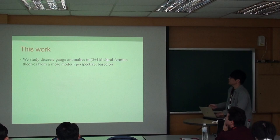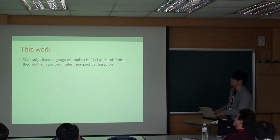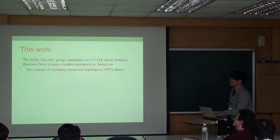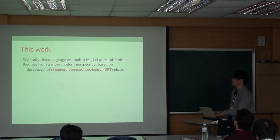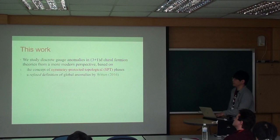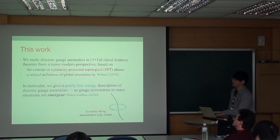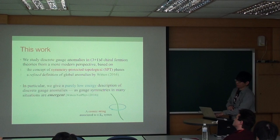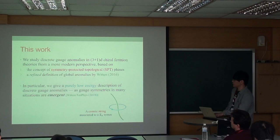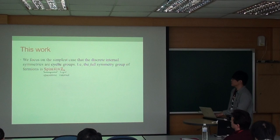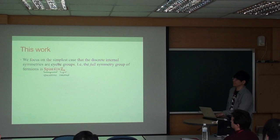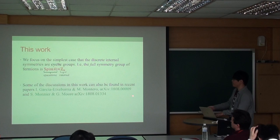Here I study or revisit discrete gauge anomalies in 4D chiral fermion theories from a more modern perspective, based on the concept of symmetry-protected topological phases, which is embedded in the condensed matter community, as well as a refined definition of global anomalies by Edward Witten recently. In particular, with a purely low-energy description of discrete gauge anomalies, the gauge structure in many situations is emergent, such as this ZN gauge field can be described by this Chern-Simons theory.